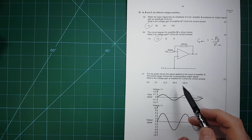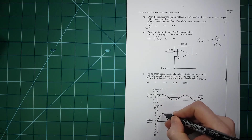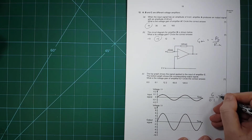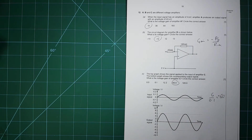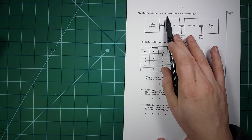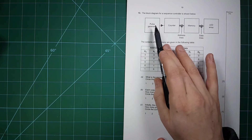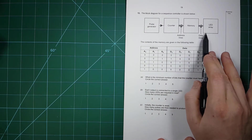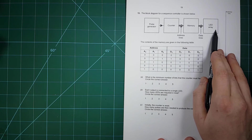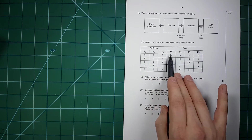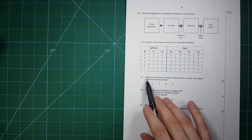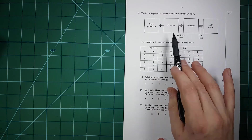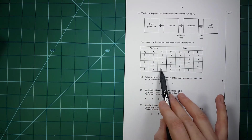The top graph shows the voltage signal applied to amplifier C; the bottom graph shows the output. The gain is 6 divided by 0.1 = 60, and it's positive, so the gain is 60. A block diagram for a sequence controller has a pulse generator, counter, memory unit, and LED array with three address lines and four data outputs. What's the minimum number of bits the counter must have? We need to be able to address all three address lines, so we need three bits.